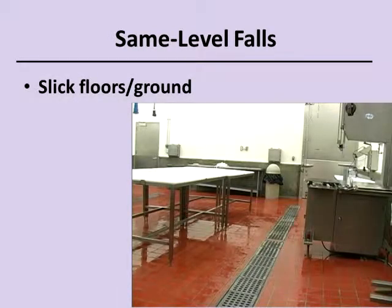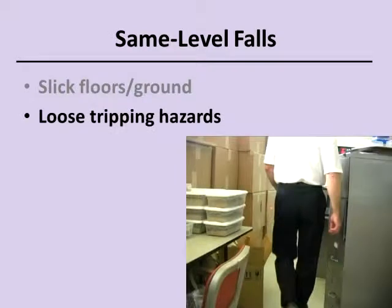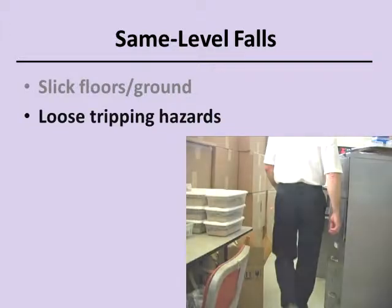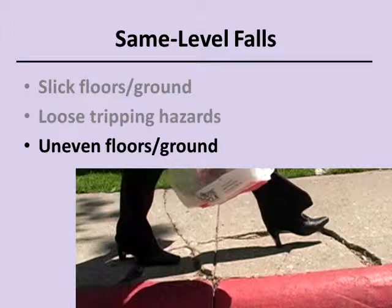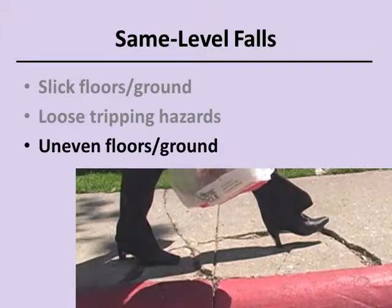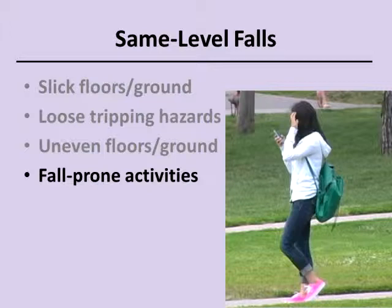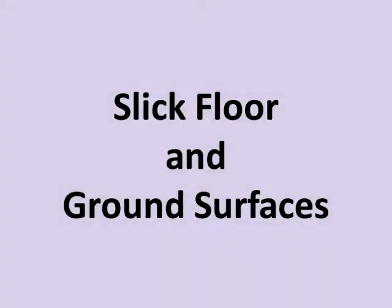This film will explore four of the leading causes of same-level falls in workplaces. First, workers often fall when their feet slide on slippery surfaces. Second, workers may trip over loose objects left in aisles and other walkways. Third, workers may stumble on imperfections in the walking surface, such as broken concrete and rugged ground. Fourth, same-level falls are especially common when workers are walking while distracted, or while carrying, pushing, and pulling objects. Let's begin by discussing same-level slips caused by slick floor and ground surfaces.